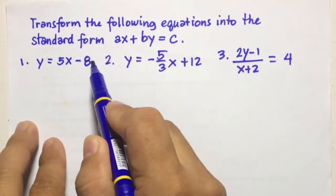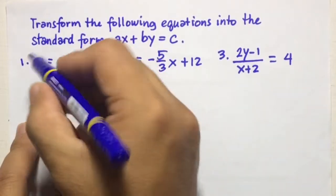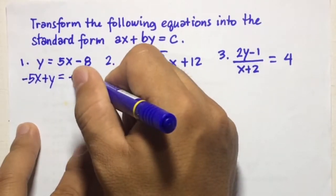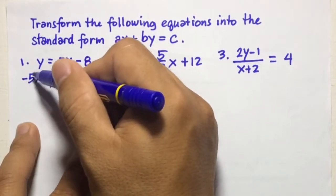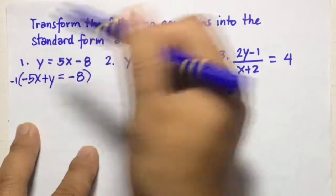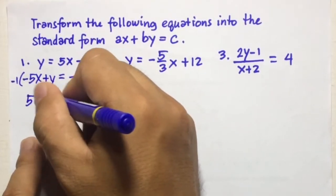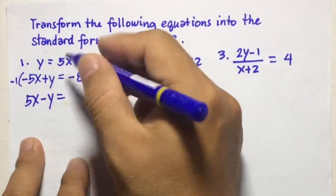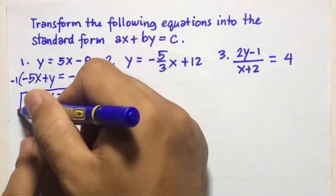Number 1: Y equals 5X minus 8. We transpose the X term to the left side, giving negative 5X plus Y equals negative 8. To make the coefficient of X positive, we multiply the entire equation by negative 1, giving 5X minus Y equals 8. So the standard form is 5X minus Y equals 8.